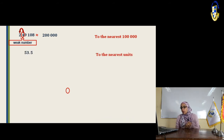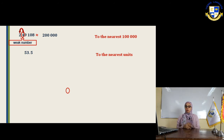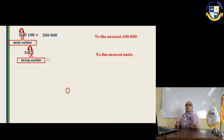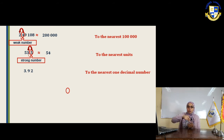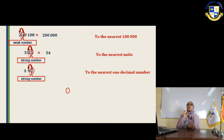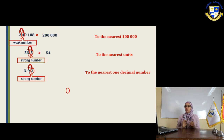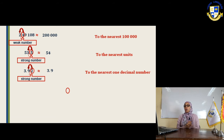Example: 53.5. We want to approximate it to the nearest unit. The unit is the first digit to the left of the point. Put a backslash on the point and look to the right — it's 5. Five is strong, so increase 3 to 4. The answer is 54. Next: 3.92, approximate to the nearest one decimal place, which means the tenth. Nine is the tenth — put a backslash between 9 and 2. Two is weak, so it doesn't do anything. The answer is 3.9.